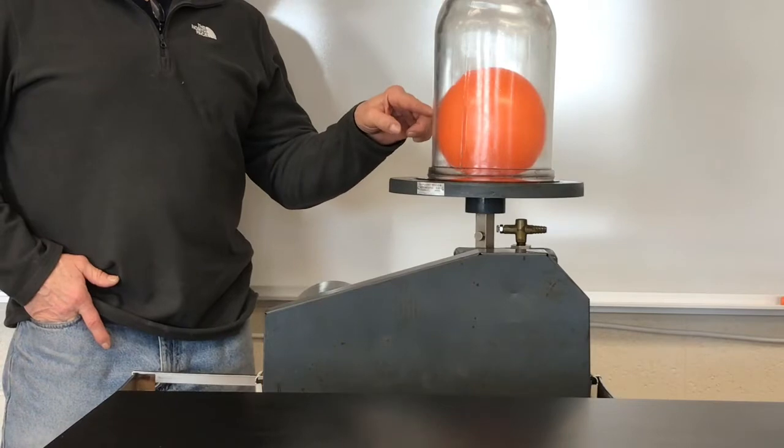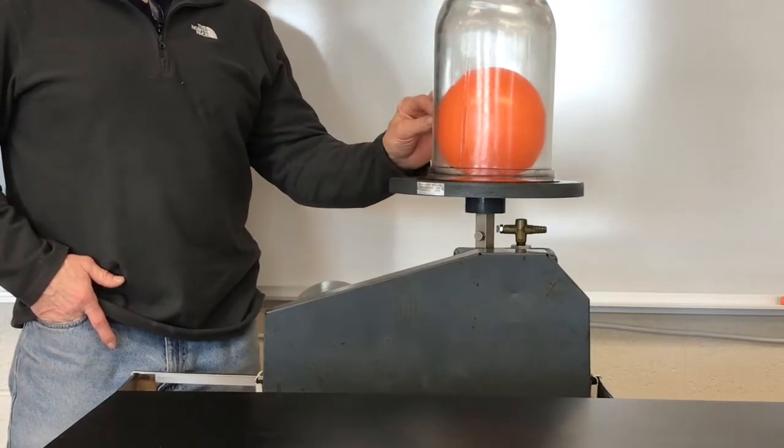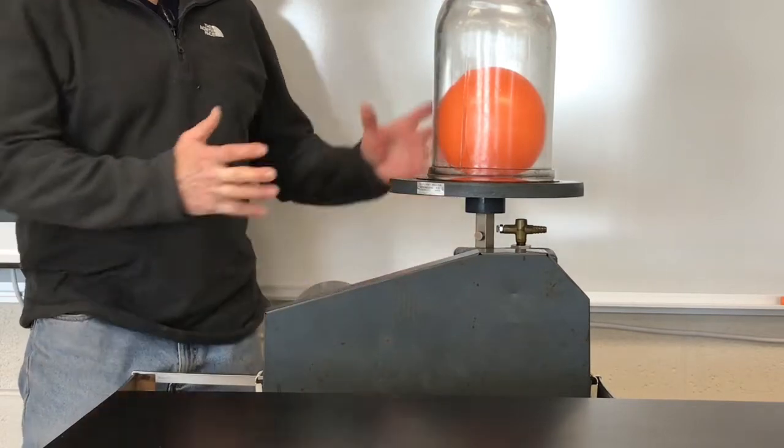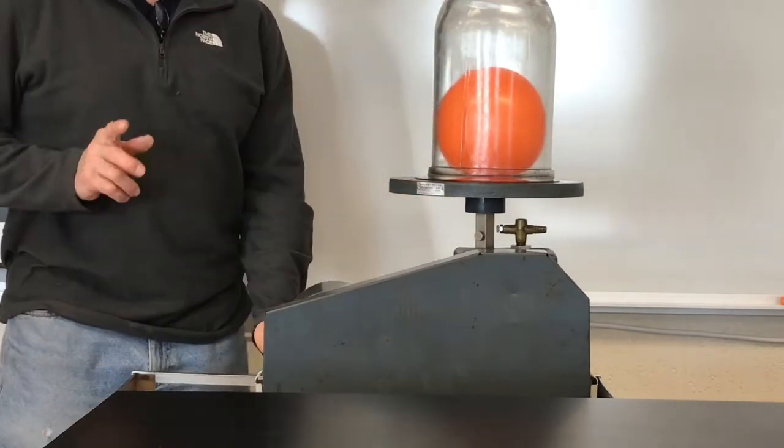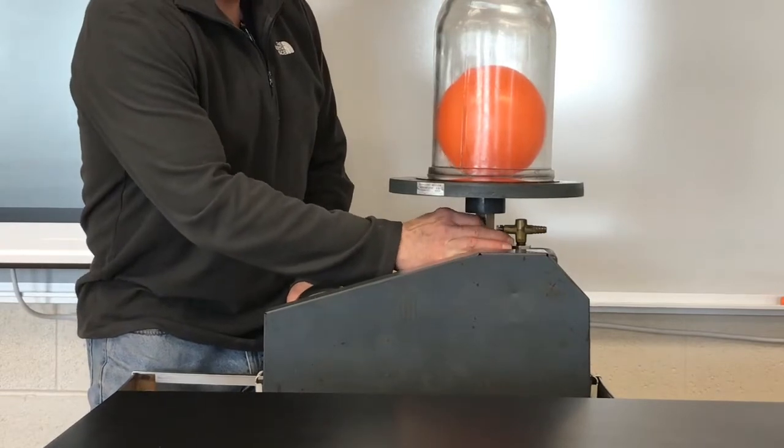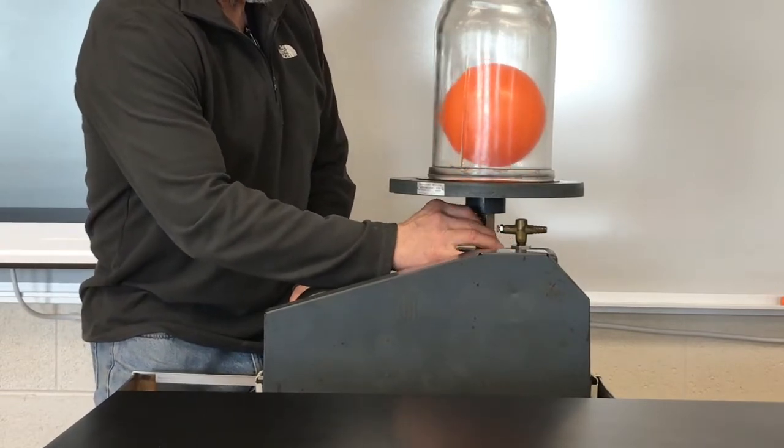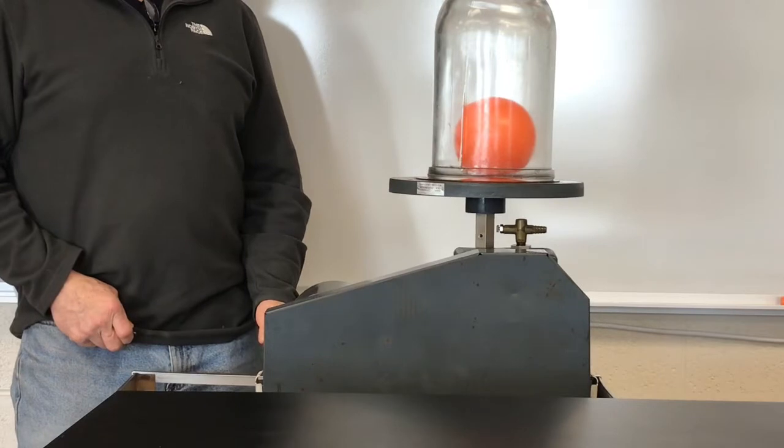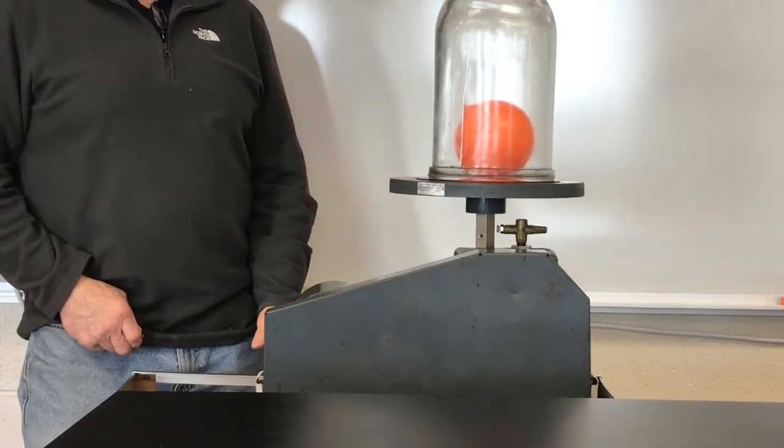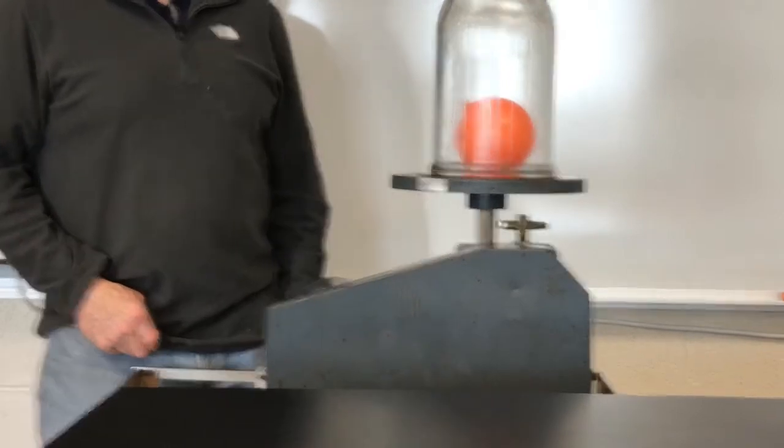We may have the problem now that the balloon has fallen to the bottom and it's plugging the hole. And so we may not really be pulling any more air out, but hopefully you saw the volume change. Now watch this. I'm going to turn the pump off and I'm going to let the air back in. And we let the air back in and the pressure resumes to normal inside there and it blooms back to original size.